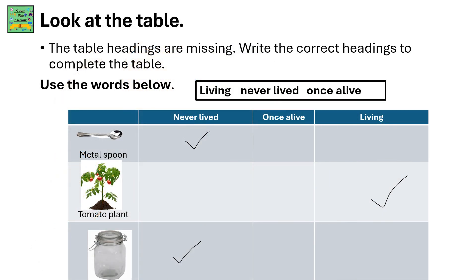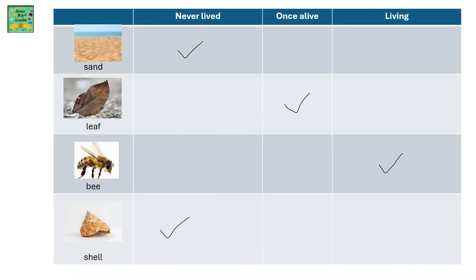Look at the table — the headings are missing. Write the correct headings using the words: living, never lived, and once alive. A metal spoon has never lived. A tomato plant is living. A jar has never lived. Sand has never lived. A leaf was once alive but is now dry and dead. The bee is living and the shell has never lived.